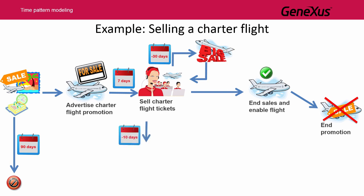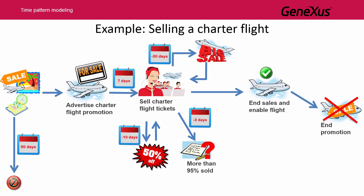When 10 days are left before the end of the process and seats are still available on the flight, an event is triggered. Even though this event doesn't interrupt the sales activity, it starts an activity to lower the prices advertised in order to attract more passengers, because the objective is to sell as many tickets as possible. When three days are left to complete the three-month period, the sales task is interrupted, and it's evaluated whether more than 95% of the seats available have been sold. If this percentage has been reached, ticket sales are stopped, the flight is enabled, the promotions are removed, and the process is ended.